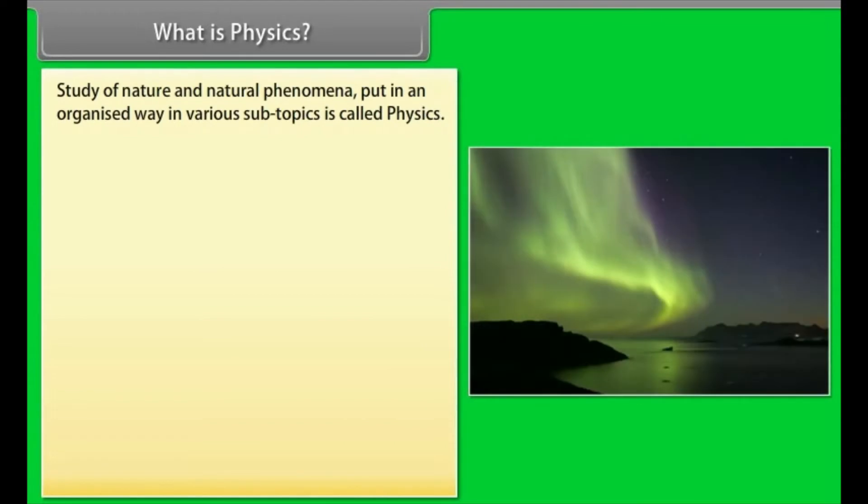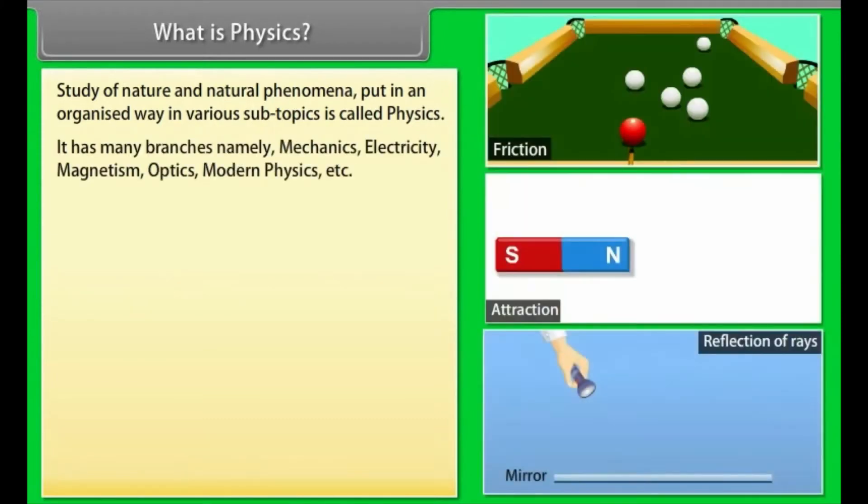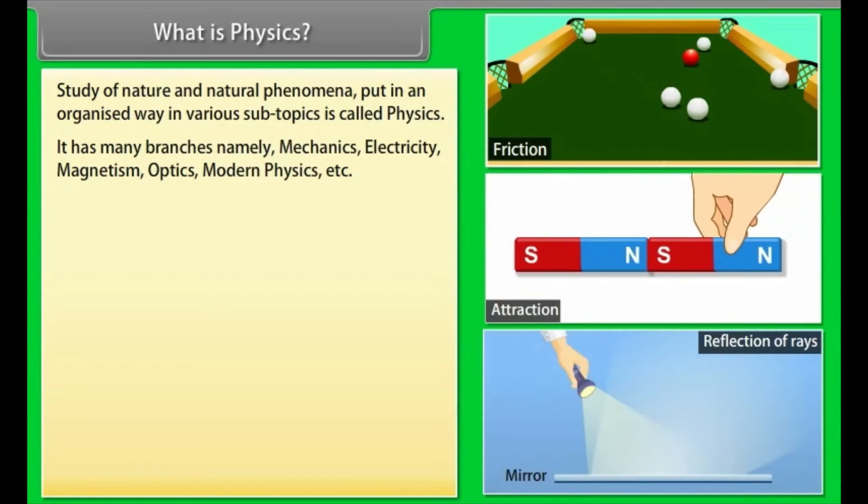What is physics? Study of nature and natural phenomena put in an organized way in various subtopics is called physics. It has many branches, namely mechanics, electricity, magnetism, optics, modern physics, etc.